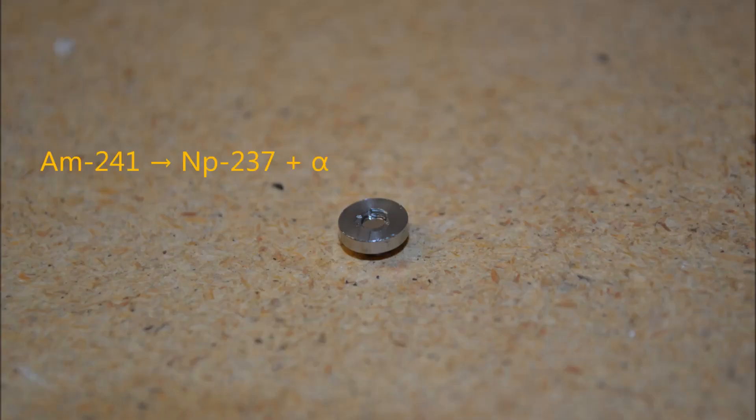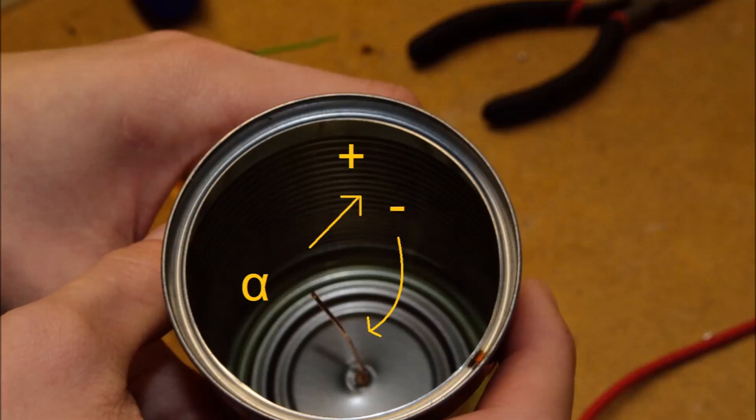Americium-241 decays through alpha emission to neptunium-237. The unstable nucleus throws off a particle, which consists of two neutrons and two protons, and moves at about 5% of the speed of light.